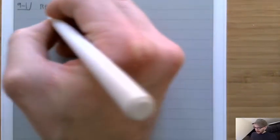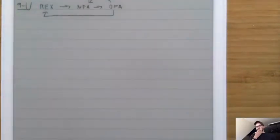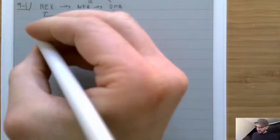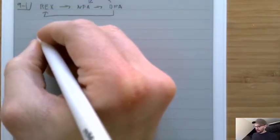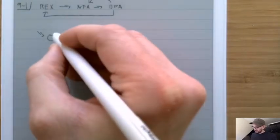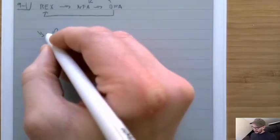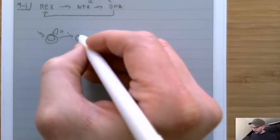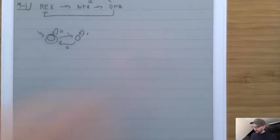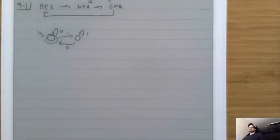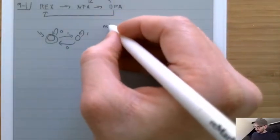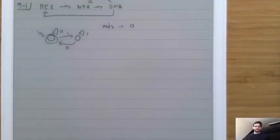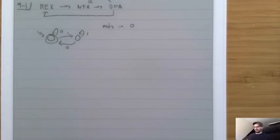But would it be possible to turn a DFA directly into a regular expression? In other words, if I were to draw a DFA — like this one, the one that says 'does it end in 0' — is it possible to turn that into a regular expression? Intuitively, I think you could just figure out how to write this as a regular expression.